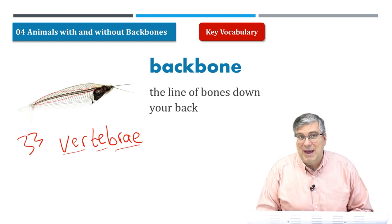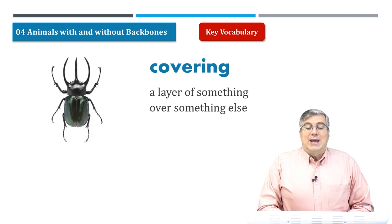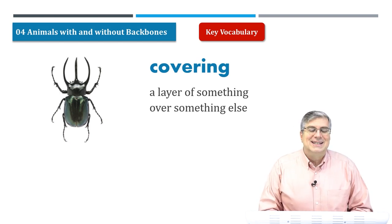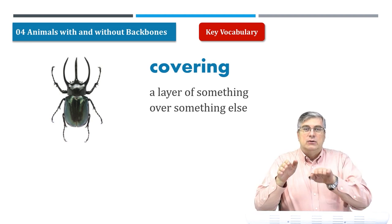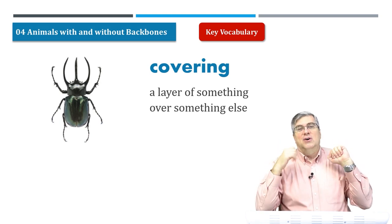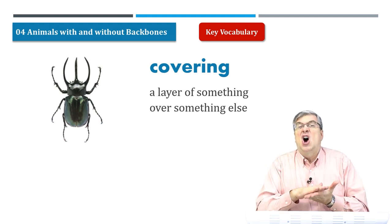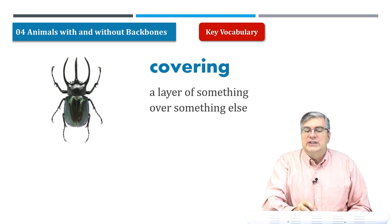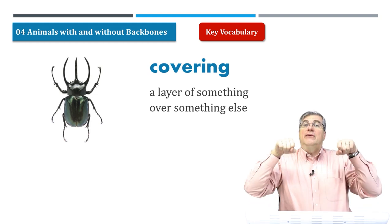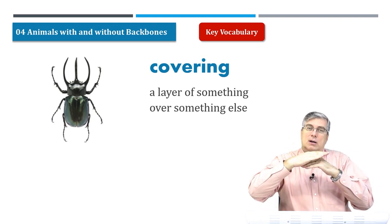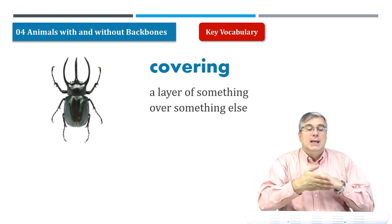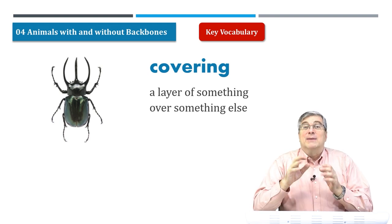Not all living things have backbones. Next, we have the word 'covering.' Here's an insect that does not have a backbone — instead it has a covering. A covering is a layer of something over something else. Like when you get into bed and pull up the blanket — it covers you. Insects have a hard covering that protects them.